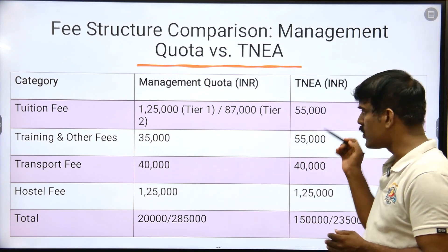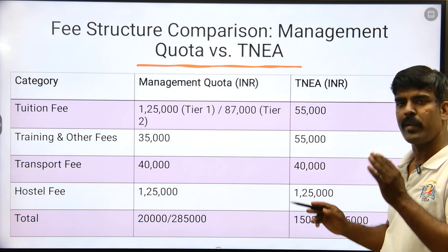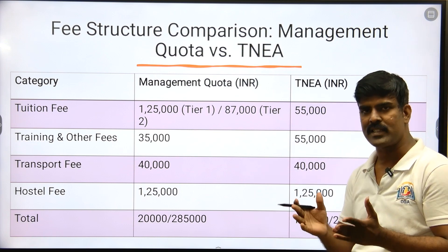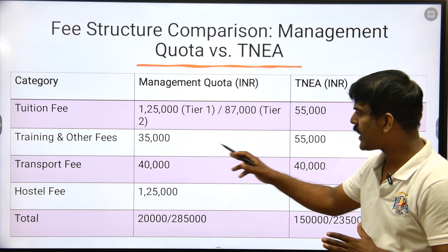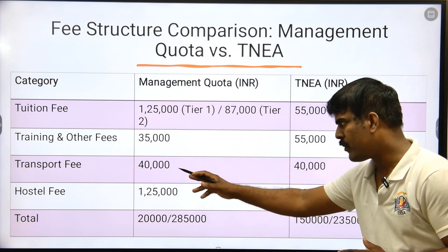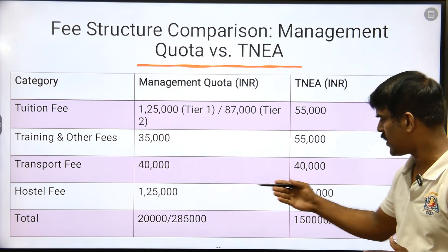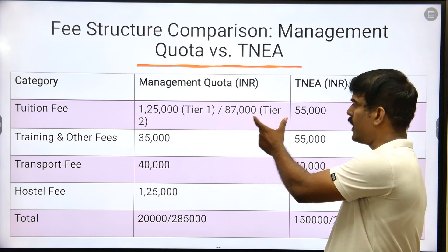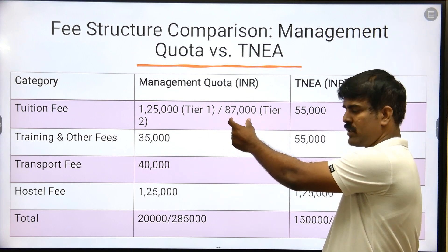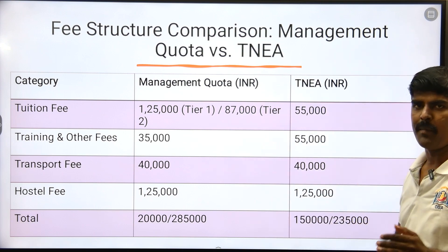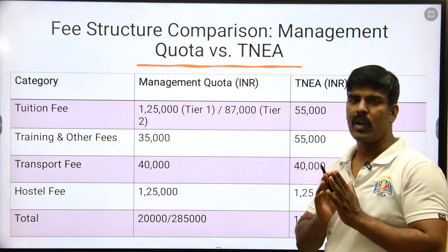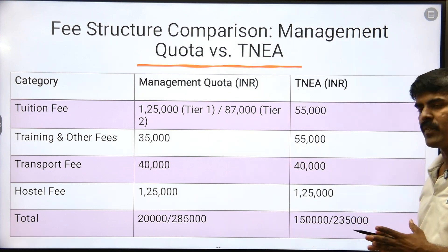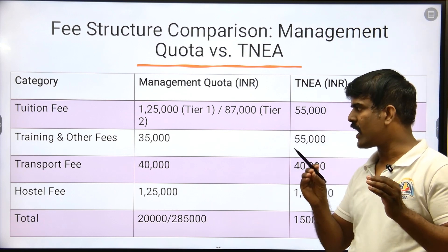If you are using NAAC accreditation, the tuition fees is only 55,000. If you are NBA accredited, it is also 55,000 or 50,000. Training and other fees are around 55,000. Transport and hostel fees remain the same. The difference comes in tuition fees — 55,000, 1,25,000, or 87,000. Overall, as a day scholar you can expect a minimum 1,50,000 fee structure. As a hostel student, you can expect a 2,35,000 fee structure.